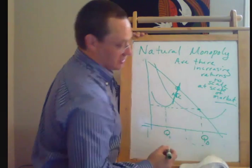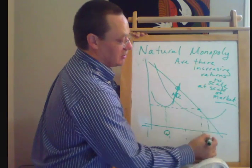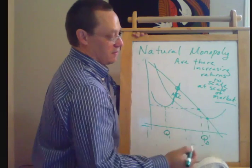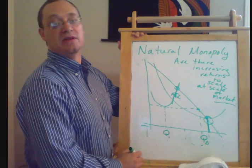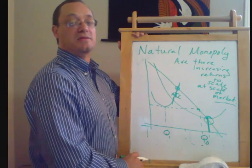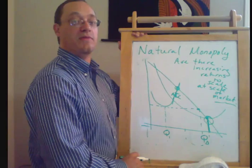On the other hand, if cost curves are like this, then it looks like the average total cost curve reaches its minimum somewhere in the neighborhood of where it hits the demand curve. That's a market that's most efficiently served by just one firm.